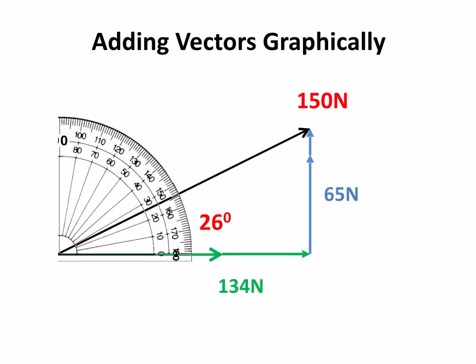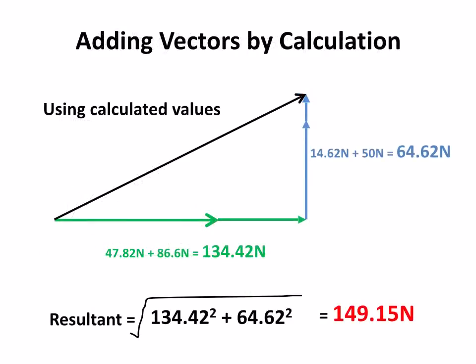So we're going to check that by calculation. Here are my calculated values for my horizontal and for my vertical. So we've got 134.42 and 64.62.